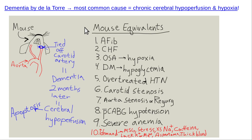You can also throw in traumatic brain injury as a risk factor for dementia in general. Other people tell me: how many people have a completely occluded carotid? Not that many. How many have severe stenosis of the internal carotid artery, more than 70%? Not that many. Well then how could that be such a big cause of dementia? Because there are other causes of chronic cerebral hypoperfusion in adults that are very common. The most common one is over-treated hypertension.